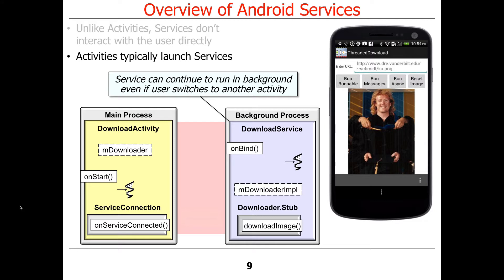Services can continue to run in the background even if the user switches to another activity. When I run the music-playing example later, you'll see that if we go check email or browse the web, the music will still continue to play in the background even though we don't have an activity currently focused on it. There was a good question on the forum about async task and its tricky aspects in relation to activities that reconfigure or shut down.